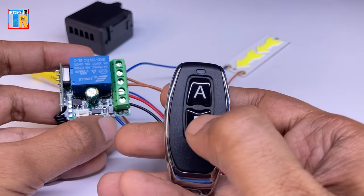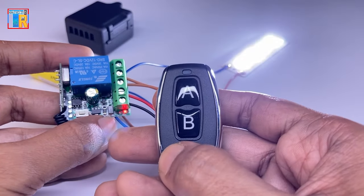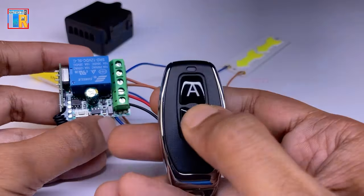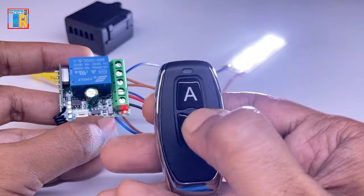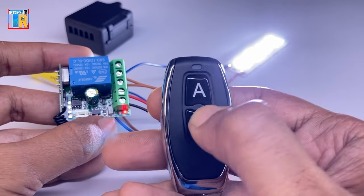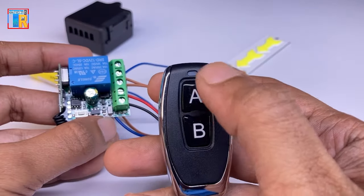We can use two modes simultaneously. Here switch A is set to momentary mode and switch B is set to toggle mode.